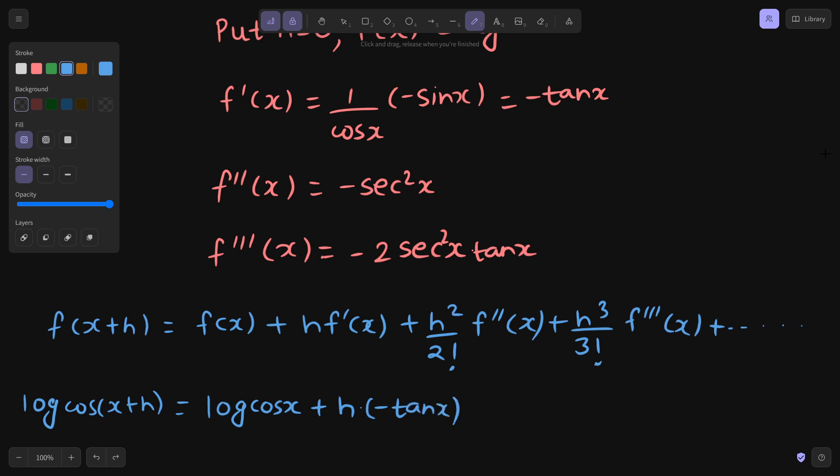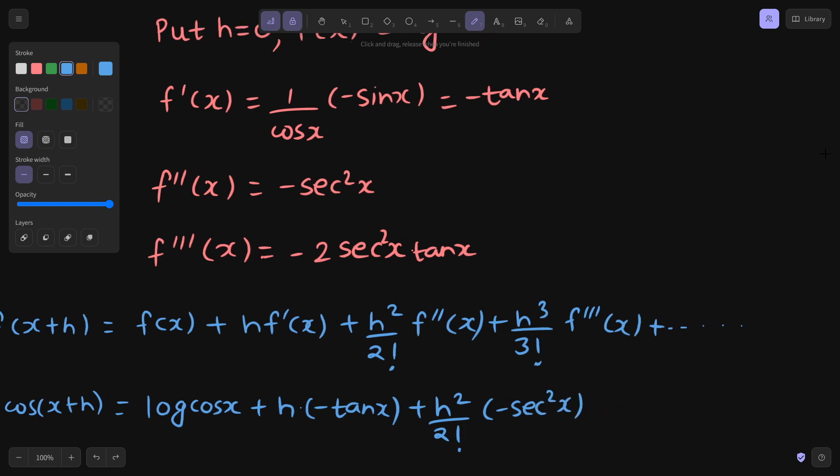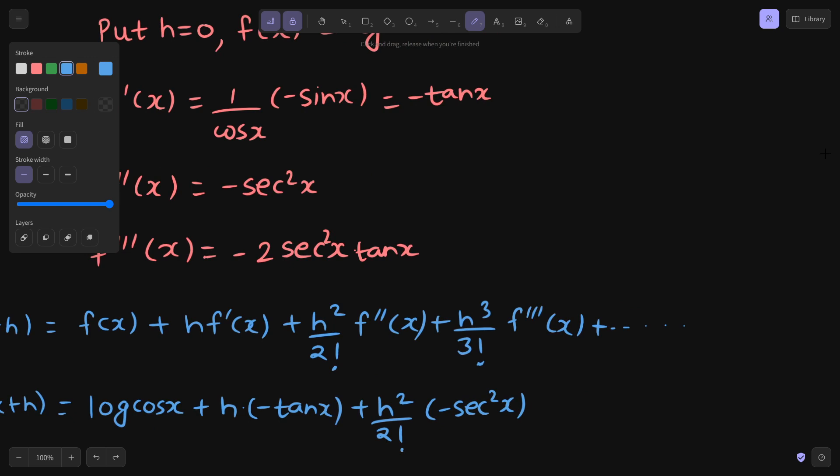What is the second derivative? Negative of secant square x. And what is the third derivative? Your third derivative is negative of 2 times secant square x tan x, and so on.